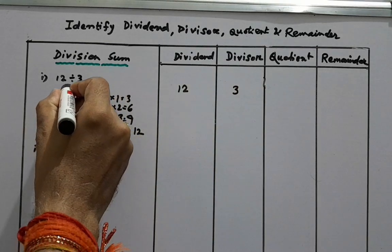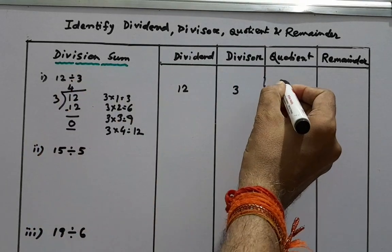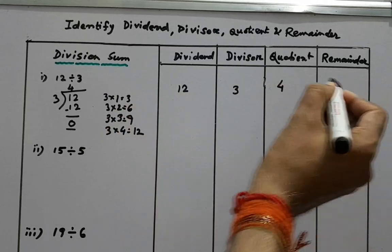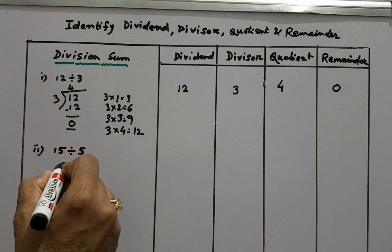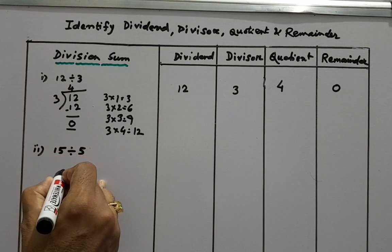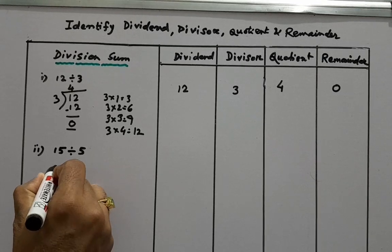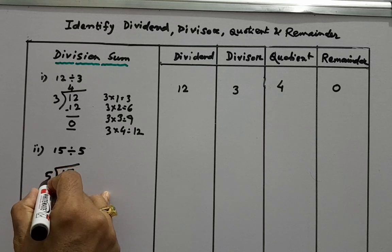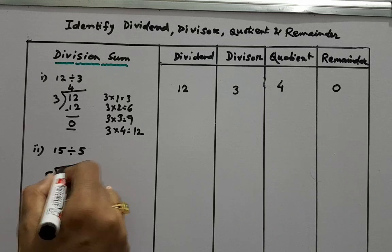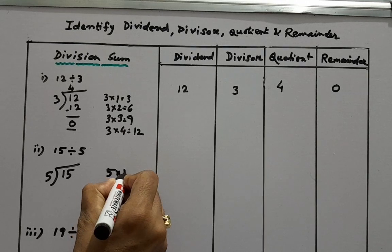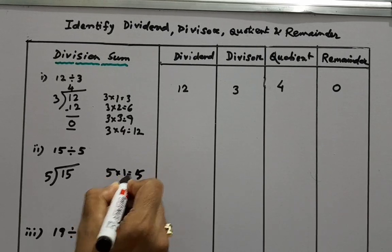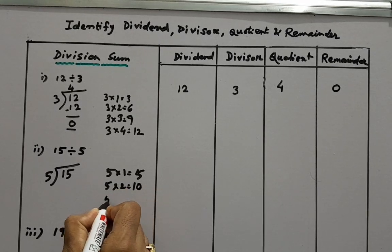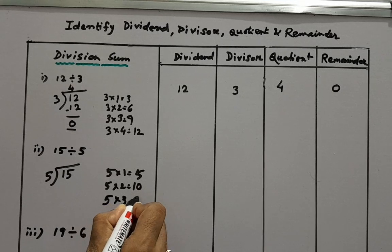So next 15 divided by 5. So we will divide 15 by 5. So here we will remember the multiplication table 5. 5 ones are 5, 5 twos are 10, 5 threes are 15.